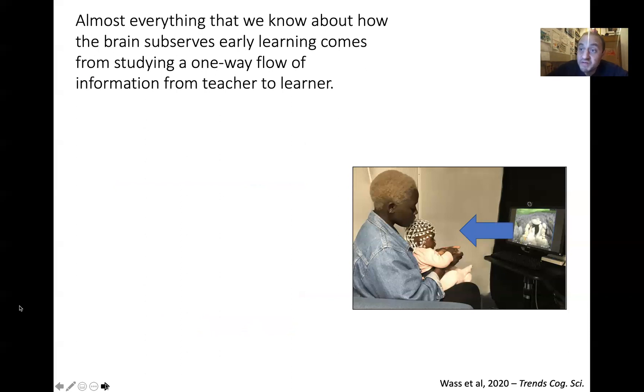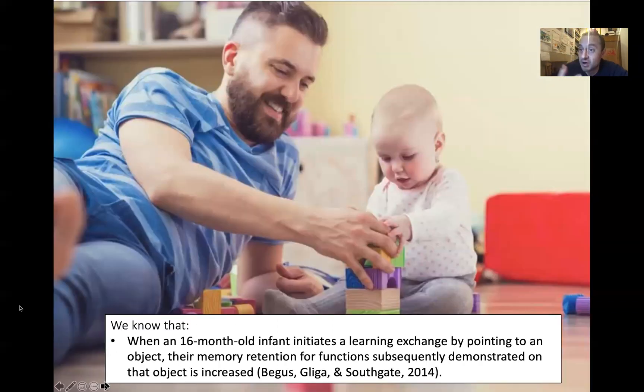So we found out a lot from these types of studies about how the infant brain processes social information. But all of these studies, as the authors readily acknowledge, this is at a fundamental level not how the brain works during social interaction. What we're studying is a one-way flow of information from the screen showing a picture to the baby. And social interaction by definition is bidirectional.